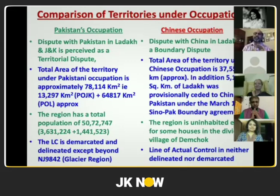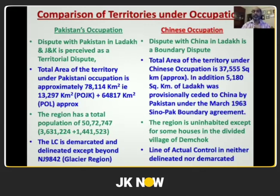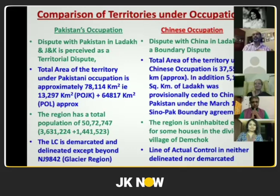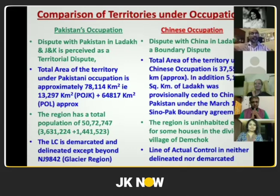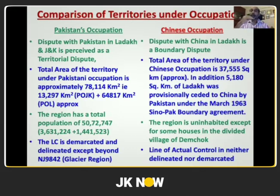I'm giving approximates because there are certain areas where the line of control and line of actual control are not delineated properly. Pakistan has territory with a vibrant population of over 5 million people, whereas the territory China has occupied is virtually uninhabited. The line of control with Pakistan from the international border up to point NJ 9842, from where Siachen Glacier emanates, is delineated on map and demarcated on ground.